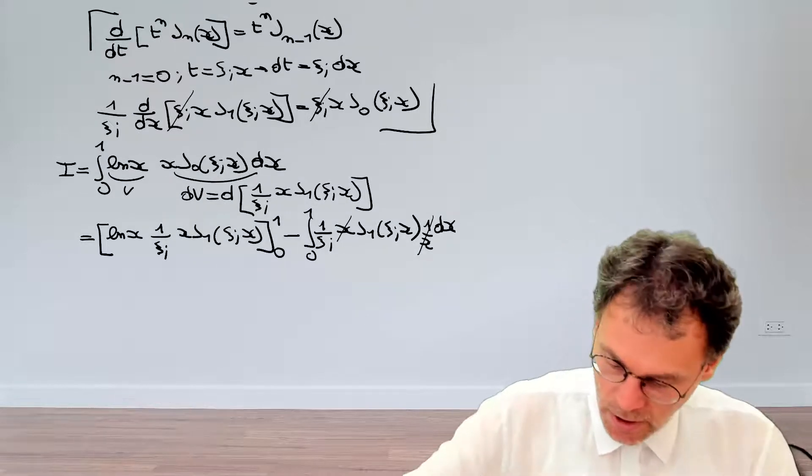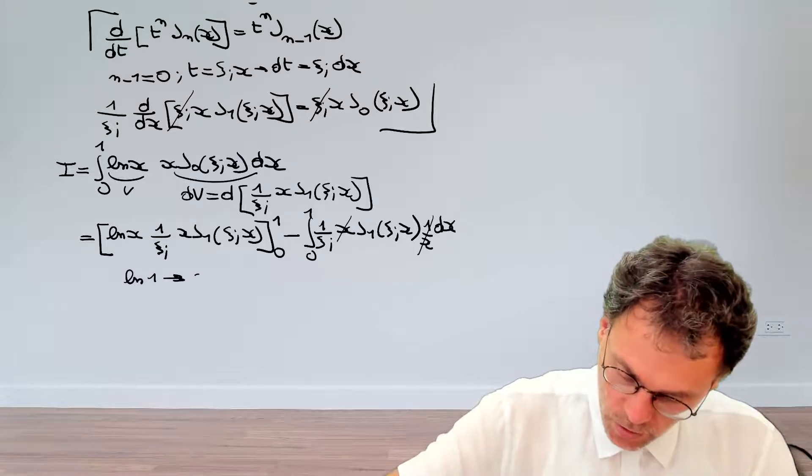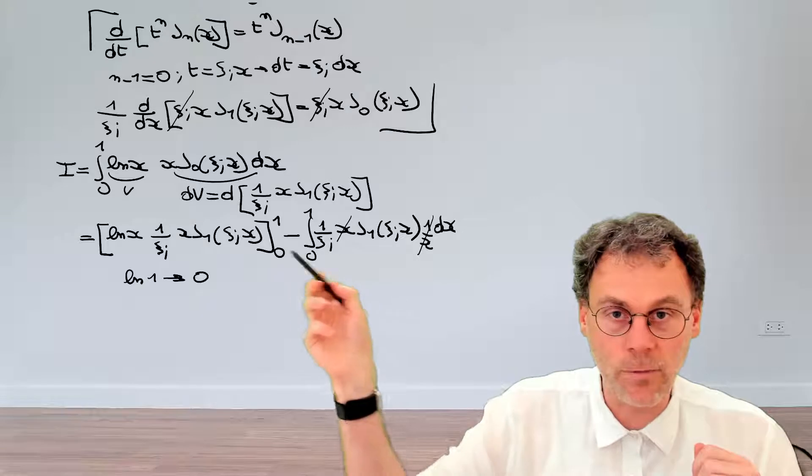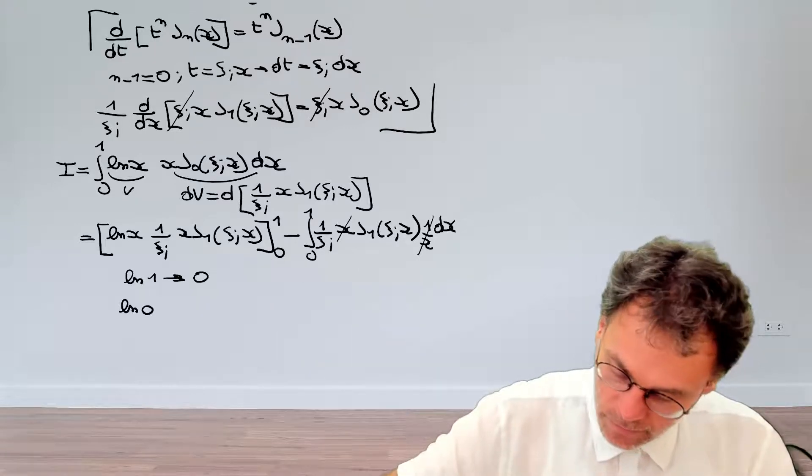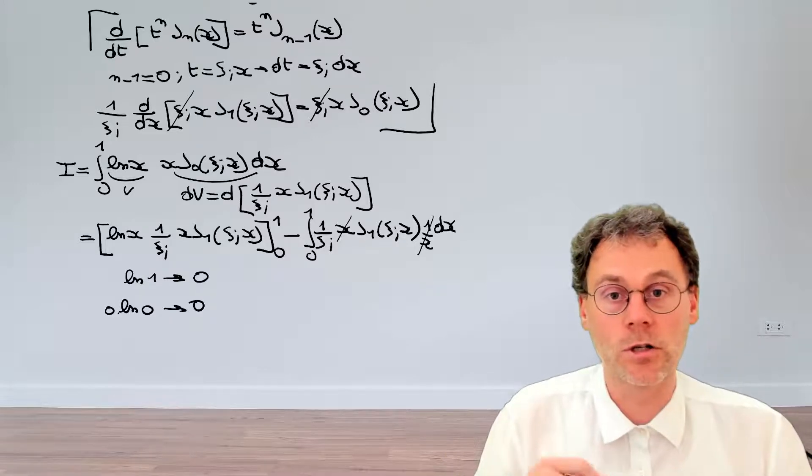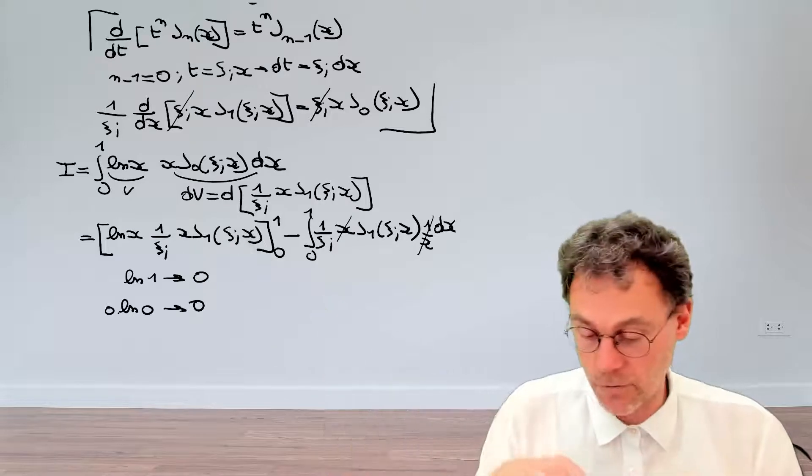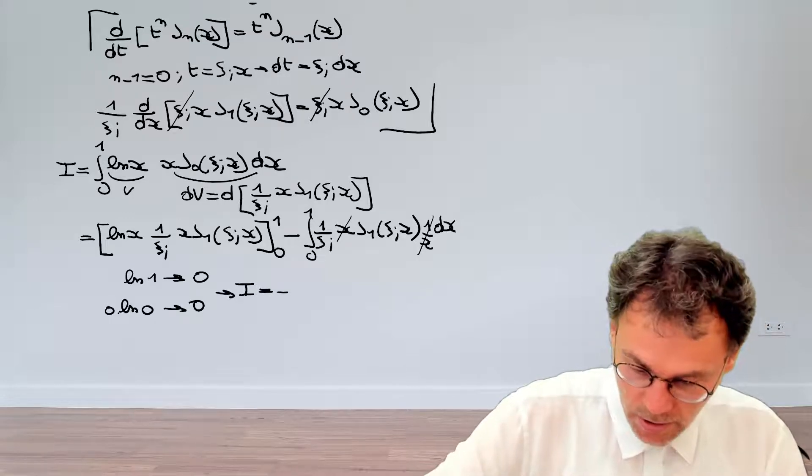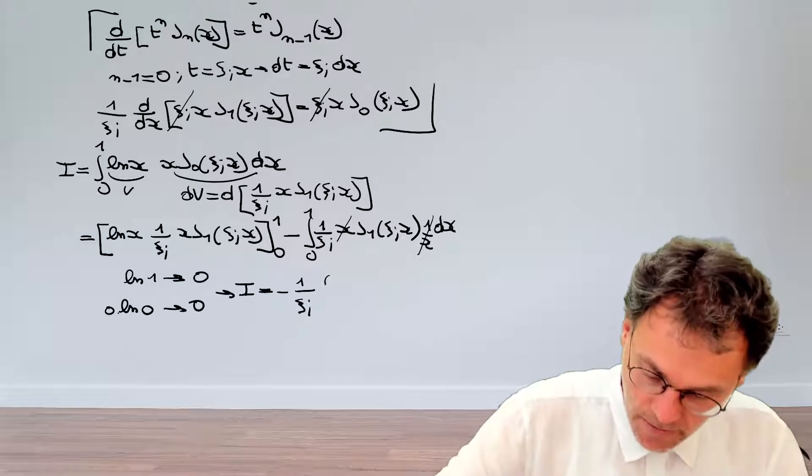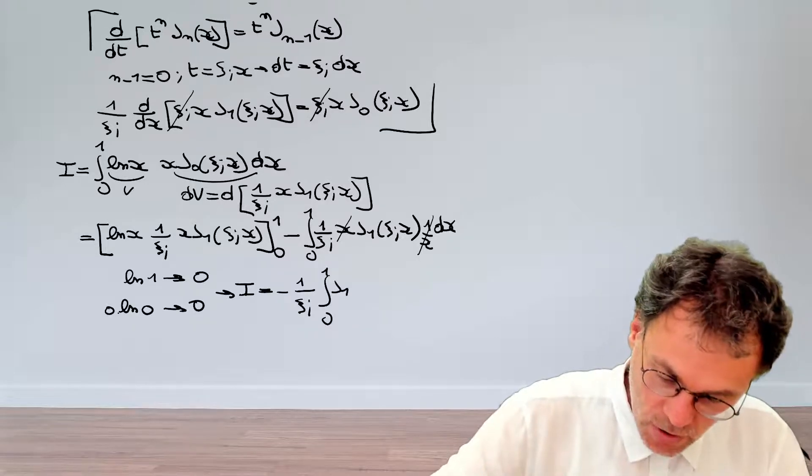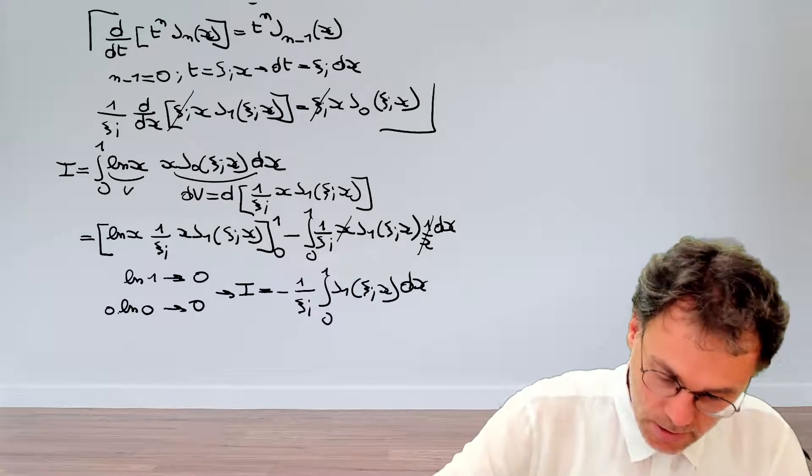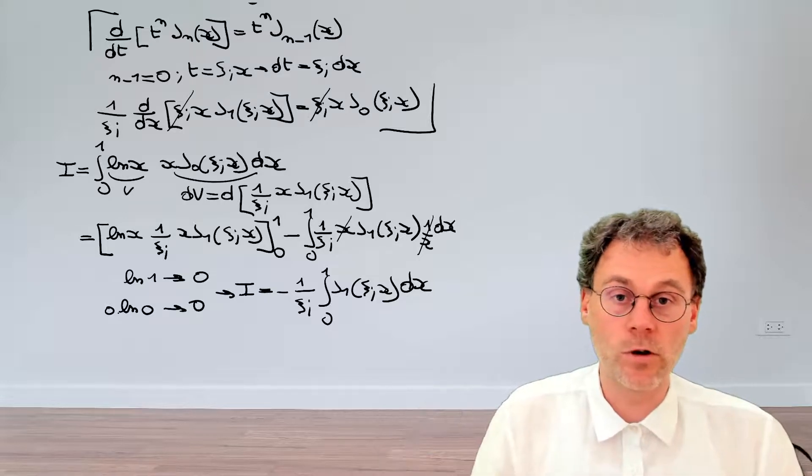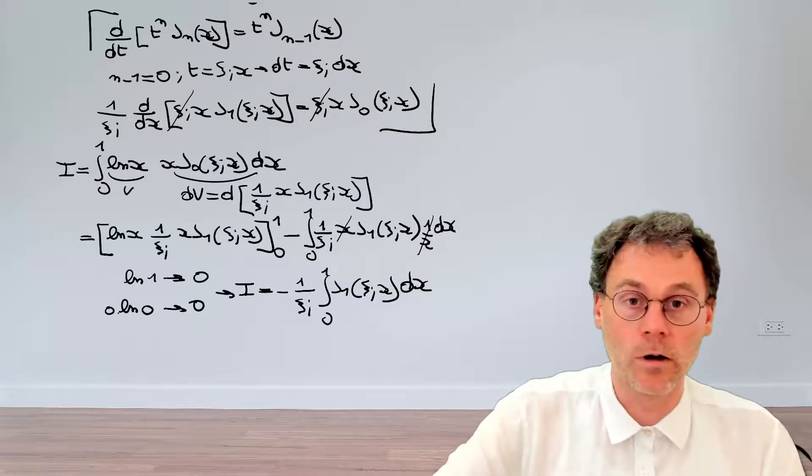So if we look at the bounds here, for the upper bounds, we have the logarithm of 1, which will be 0. For the lower bounds, we have the logarithm of 0, which is problematic, but we multiply, of course, by x. So in essence, we have a limit of the type 0 times logarithm of 0, which will also vanish. So we do not need to concern ourselves with this first term here. So that's pretty good news. And that means that our integral just reduces to minus 1 over xi i, the integral from 0 to 1, j1 xi i of x dx. So that sounds very promising. We've simplified our integral considerably. So pause the video here and see if you can do similar steps to solve this integral completely.